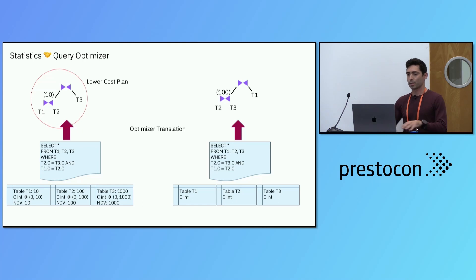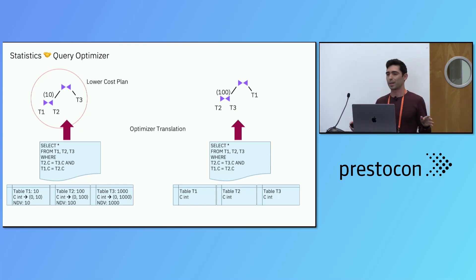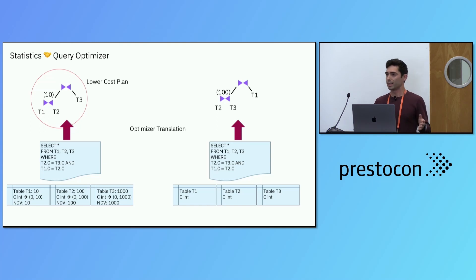This is a gross oversimplification of everything the query optimizer does, but I hope it gives you an idea of how statistics are used.